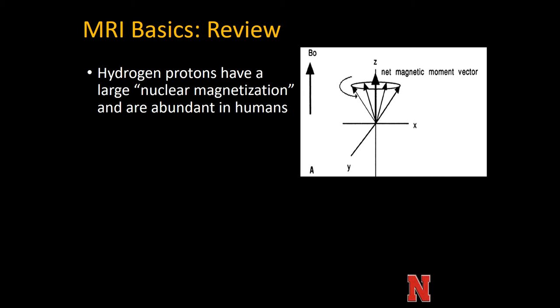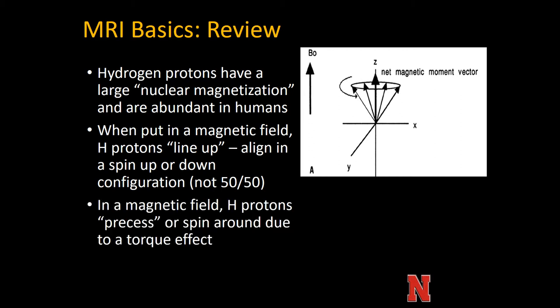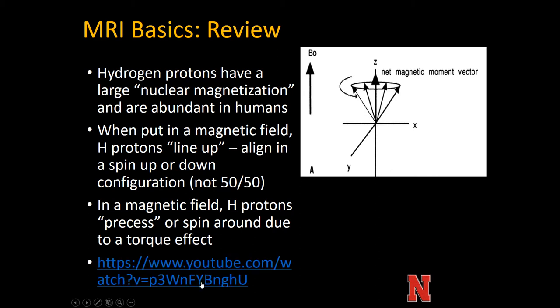To start, you have to start at the hydrogen atom. Hydrogen protons have a large nuclear magnetization and are very abundant in humans — that's why they're so useful for MRI. When we put a human in a magnetic field, those hydrogen protons line up in a spin-up or spin-down configuration. It's not 50-50; there are always slightly more in the direction of the magnetic field. In a magnetic field, the protons precess — they spin around due to a torque effect within the magnet.